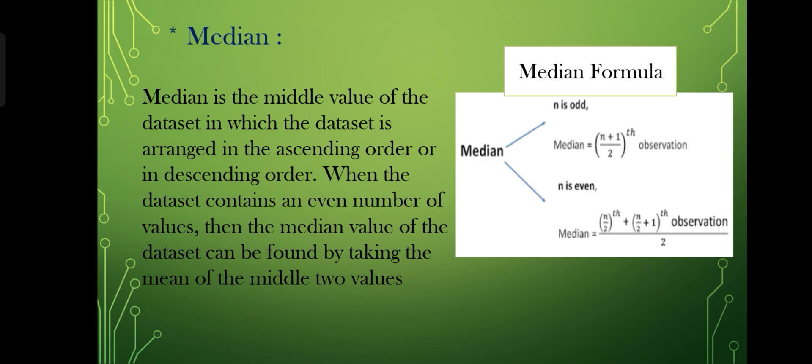Median is the middle value of the data set in which the data set is arranged in the ascending order or in descending order. When the data set contains an even number of values, then the median value of the data set can be formed by taking the mean of the middle two values.